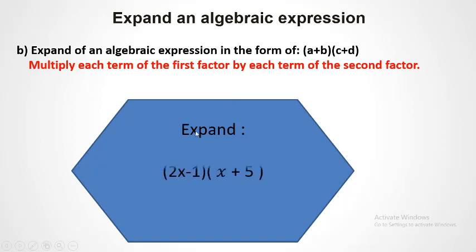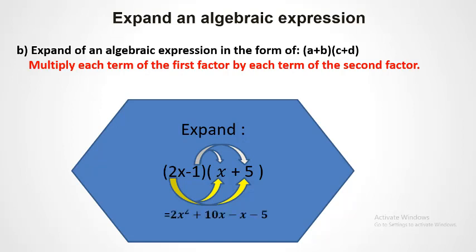For example, expand 2x minus 1, which is the first factor consisting of two terms, multiplied by the second factor. 2x multiplied by x gives 2x squared — the coefficient is 1, so 2 times 1 is 2 and x times x is x squared. Plus 2x multiplied by 5 gives plus 10x. Then minus 1 times x is minus x.